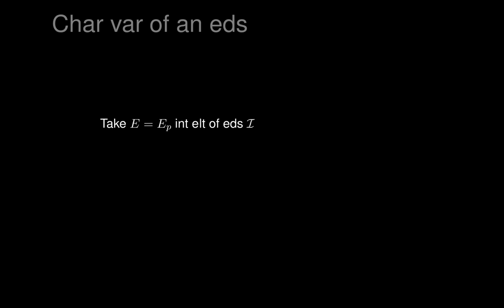Let's give a definition of the characteristic variety of an exterior differential system. I'll leave the student to investigate why this definition corresponds to the definition we wrote down in partial differential equations. To prove the equivalence of these definitions is a problem in the lecture notes, and the solution is given in the back in case you can't see how to get it to work out.